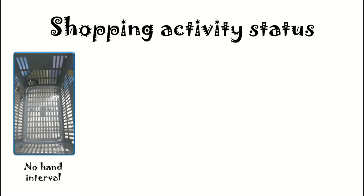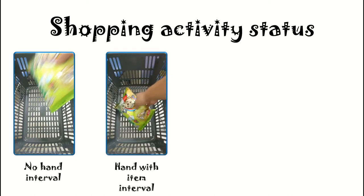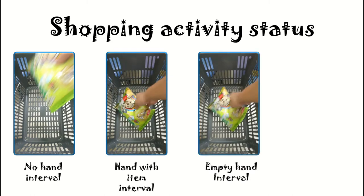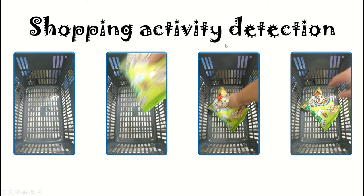The action recognition finds time intervals in which most frames are labeled as the same class. The action intervals are: a no hand interval, a holding item interval, an empty hand interval, and a no hand interval. The shopping event happens between two successive no hand intervals.